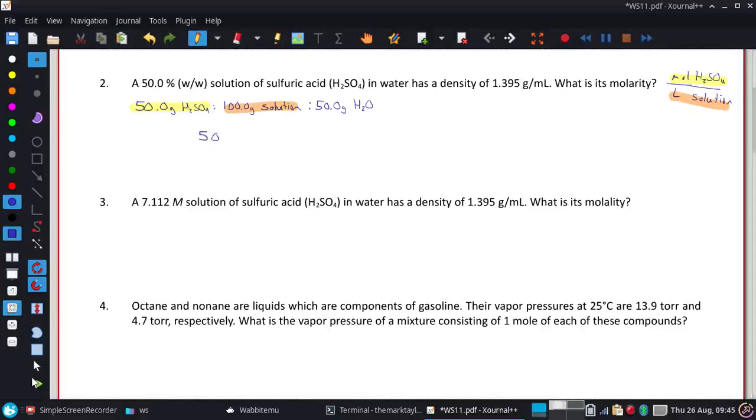By separate, I mean we'll take the 50 grams of H2SO4 and use the molar mass to convert to moles. H2SO4, if I did my math right, is 98.09 grams per mole.